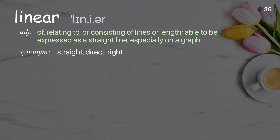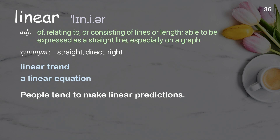Linear: of, relating to, or consisting of lines or length; able to be expressed as a straight line, especially on a graph. Examples: linear trend, a linear equation. People tend to make linear predictions.